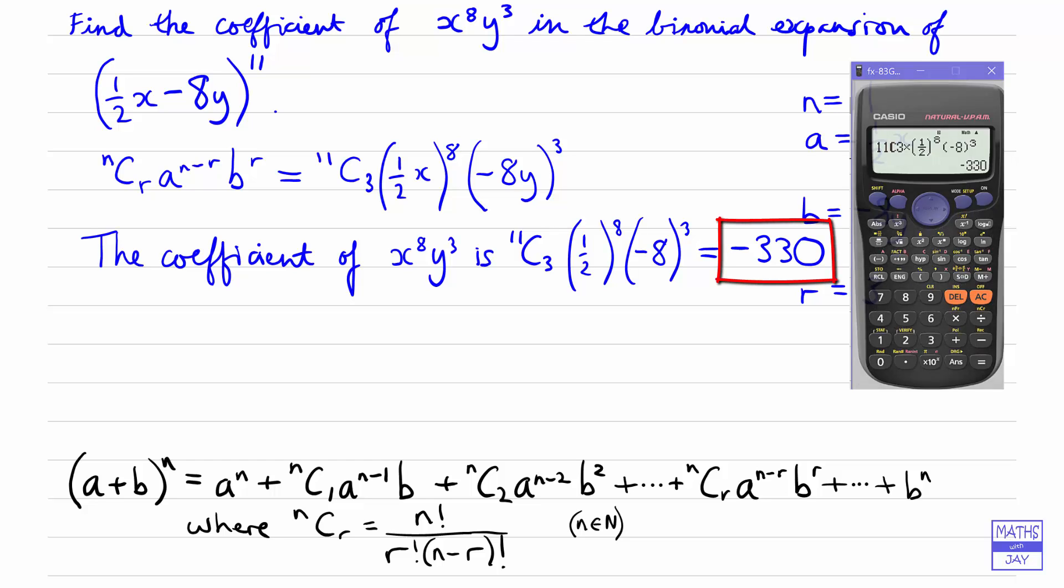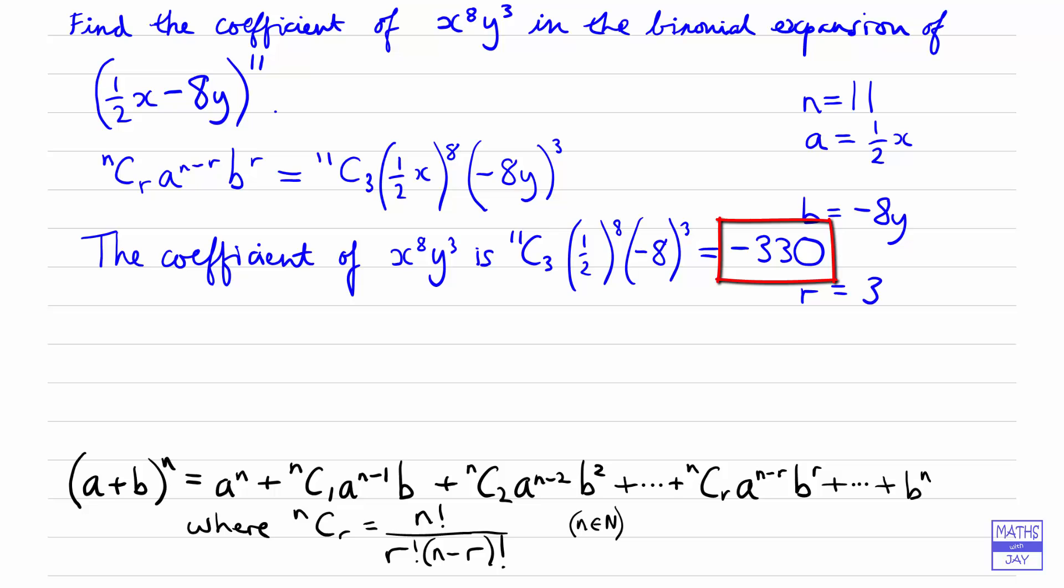If you prefer to write this down without using a calculator, then you would have 11 factorial divided by 8 factorial times 3 factorial for the 11C3. And then we would have 1 over 2 to the 8. The whole thing is going to be negative because we've got a negative being cubed.